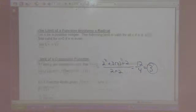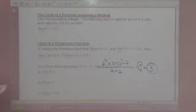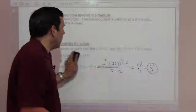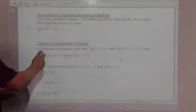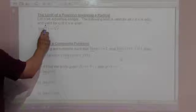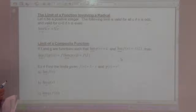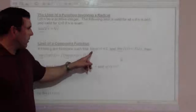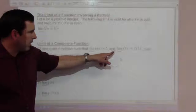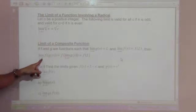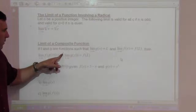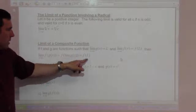The limit of a function involving a radical: let n be a positive integer. The following limit is valid for all c if n is odd, and valid for c positive if n is even. As x goes to c, the limit of the nth root of x is the nth root of c. For the limit of a composite function: if f and g are functions, the limit as x goes to c of g of x equals L and the limit of f of x equals f of L, then the limit of f of g of x as x goes to c is f of L.